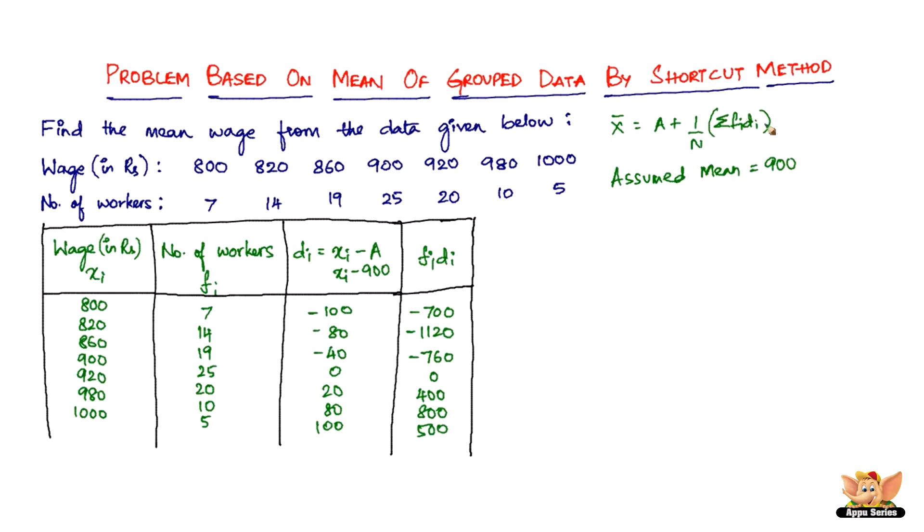So what do we need as far as the formula is concerned? We need n which is the sum of the frequencies, and then we need the sum of fidi. We have the A which is 900. The sum of this comes up to 100 and the sum of this comes up to negative 880 when you add all these things.